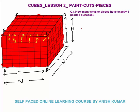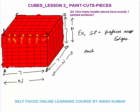Question three: how many smaller pieces have exactly one painted surface? Exactly one surface painted means the cubes lie on the surfaces except edges — we don't include the edges on the surface because edge cubes have 2 surfaces painted. Each surface has dimension 7×7, meaning 49 cubes are on each surface.